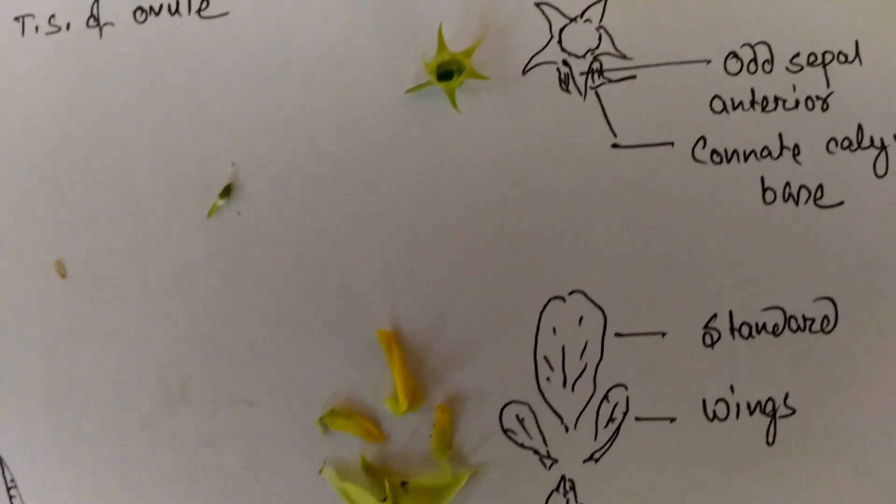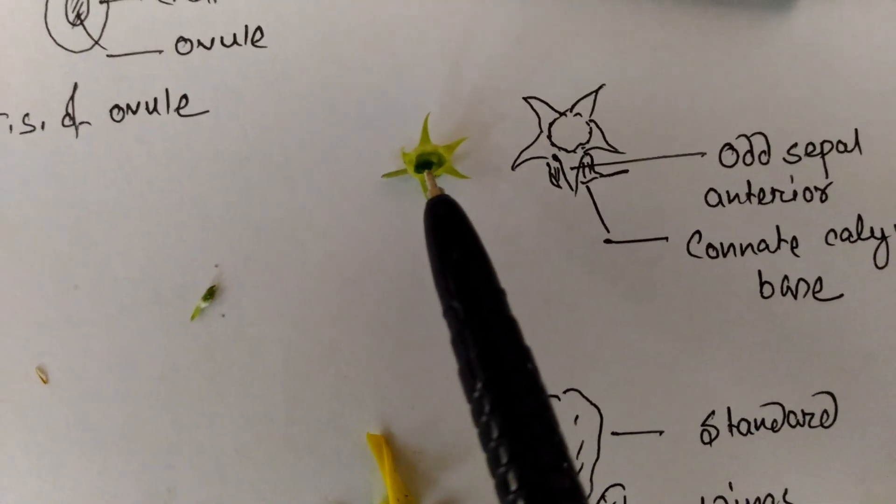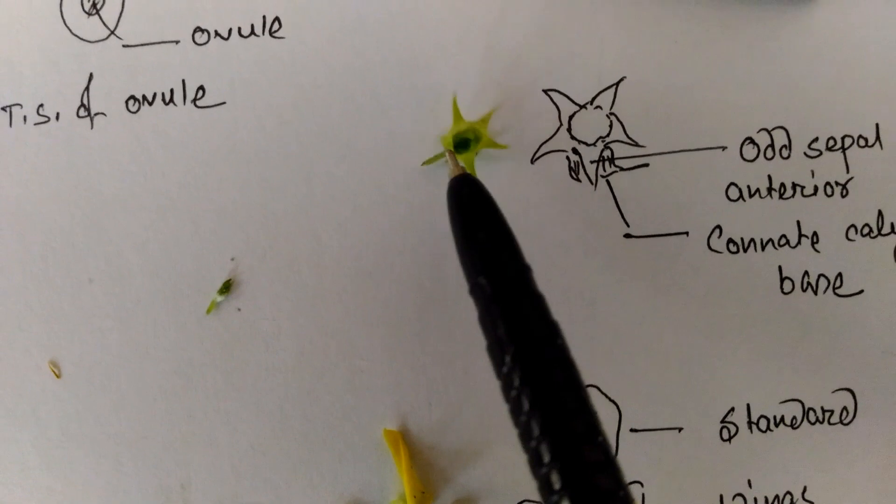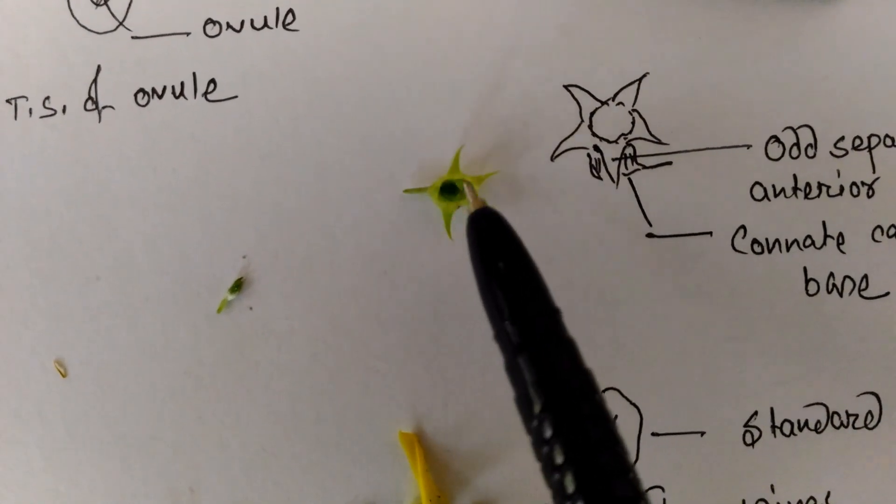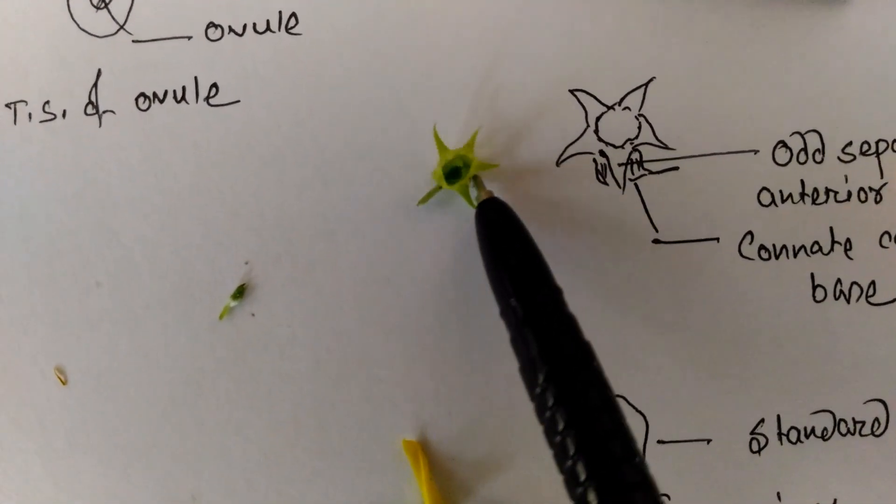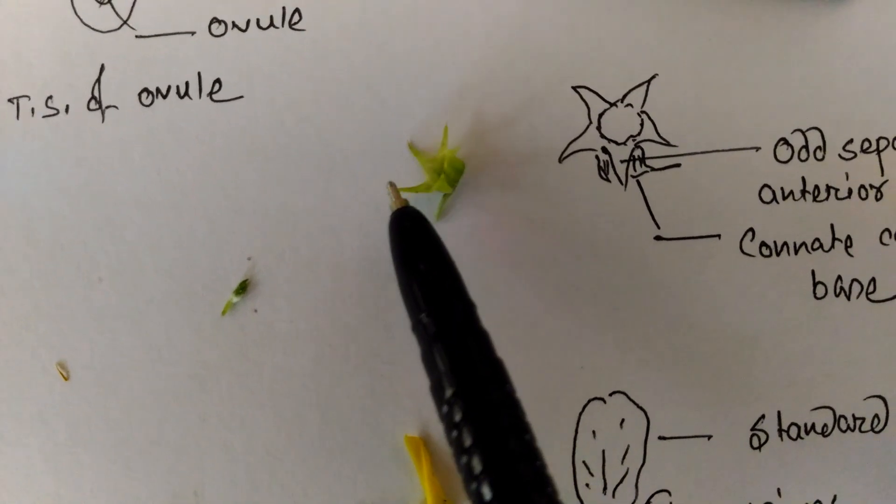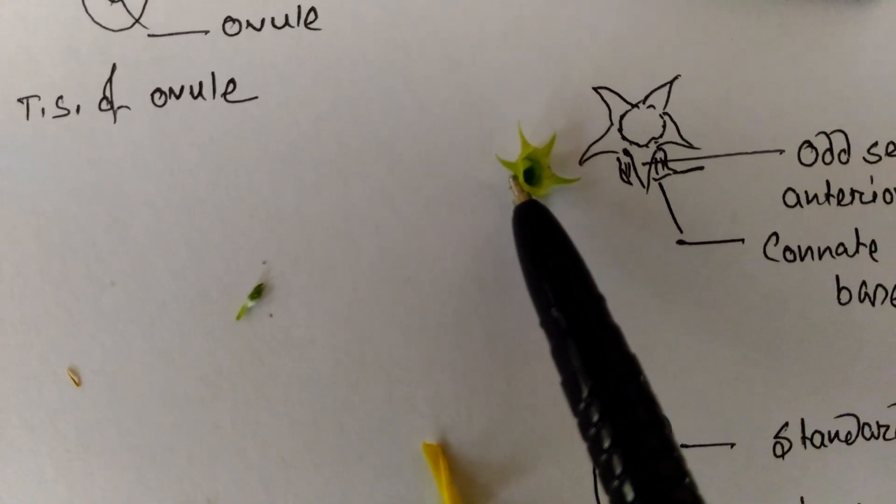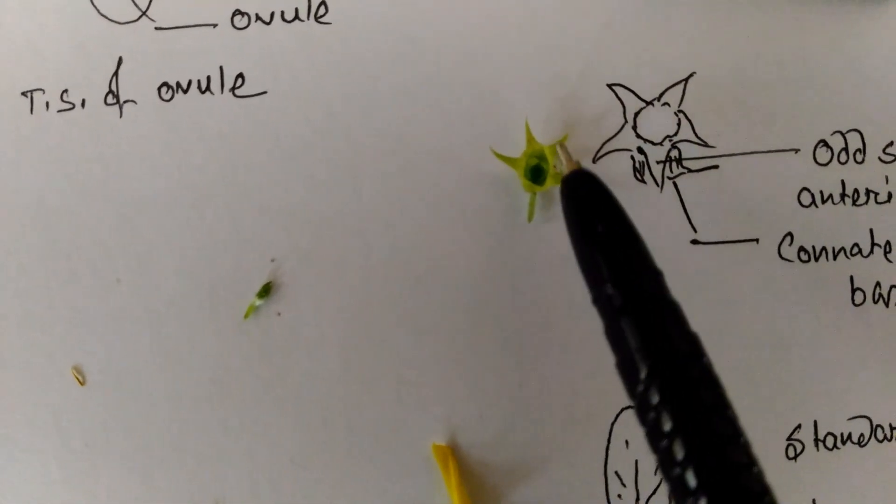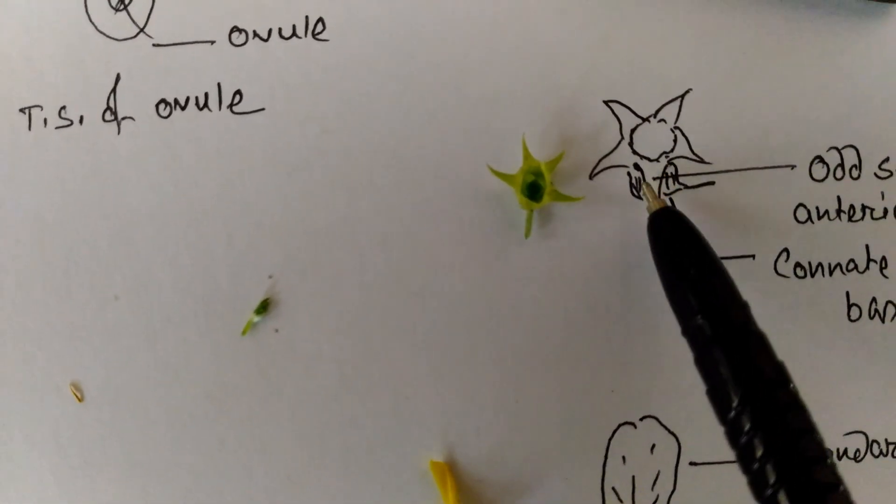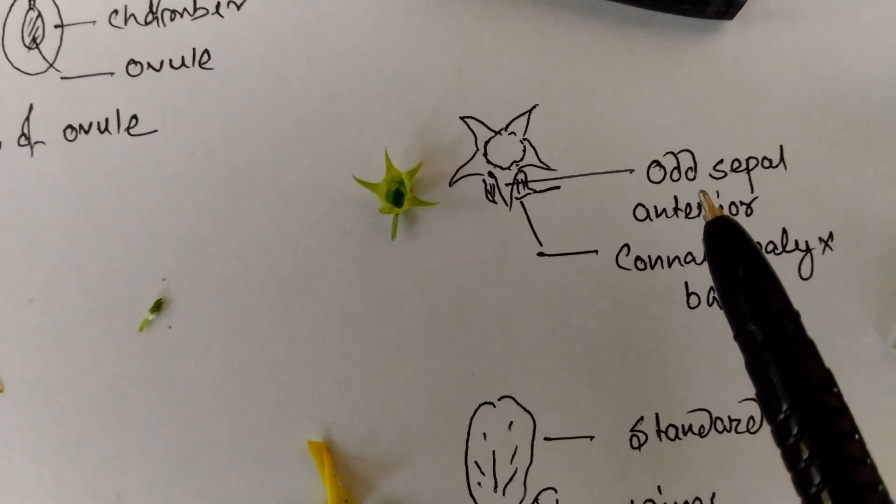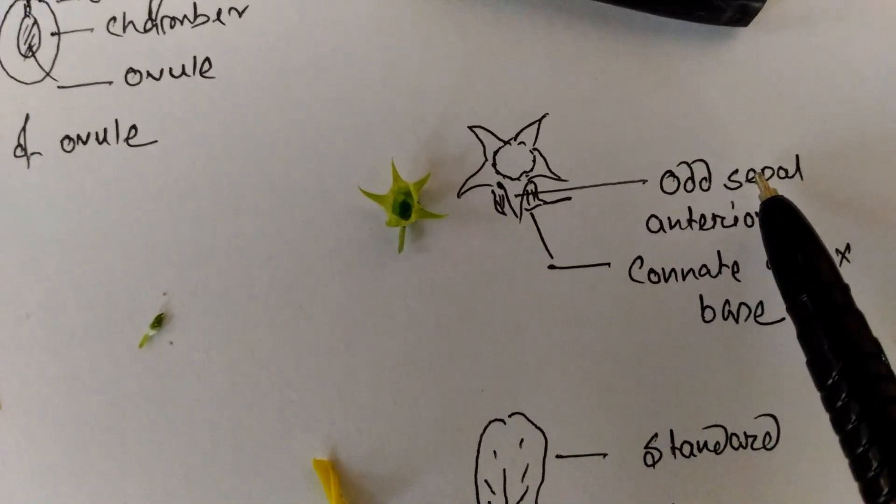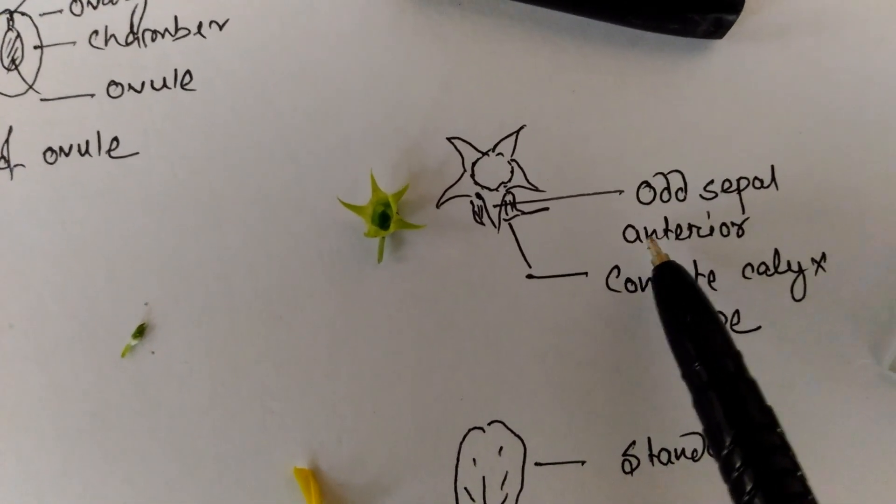We are moving to the calyx. This is the calyx tube having 5 sepals, and the base is a little bit connate, that is united, and the upper portion are free. Aestivation is valvate. The number of sepals are 5, so it is gamosepalous.